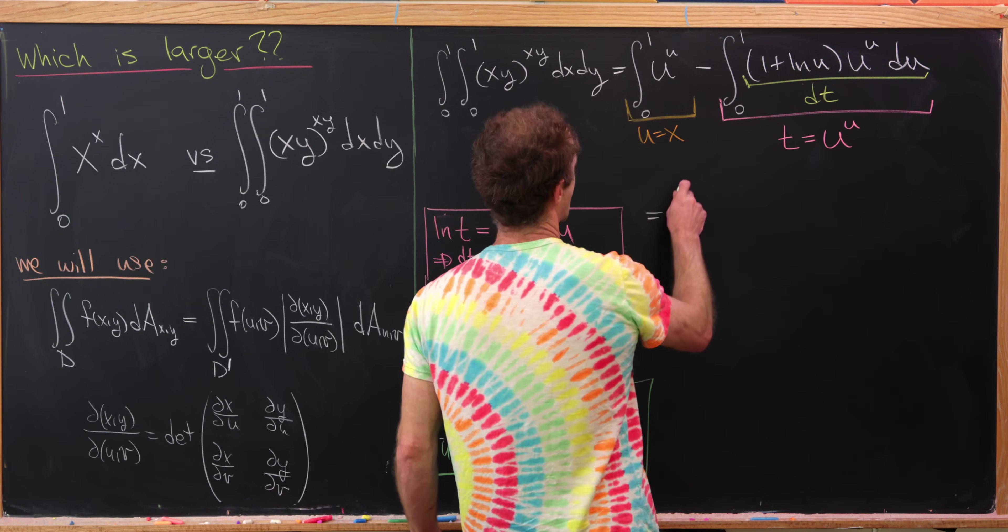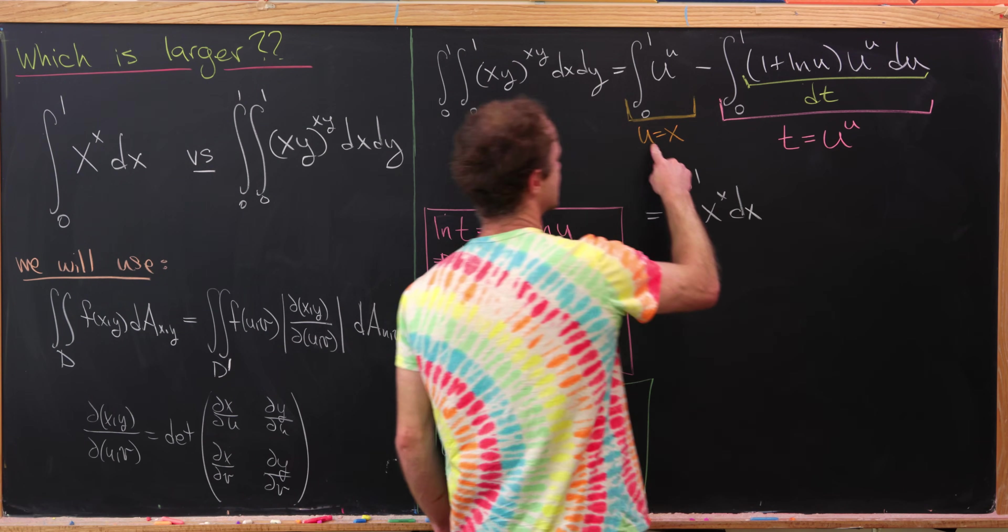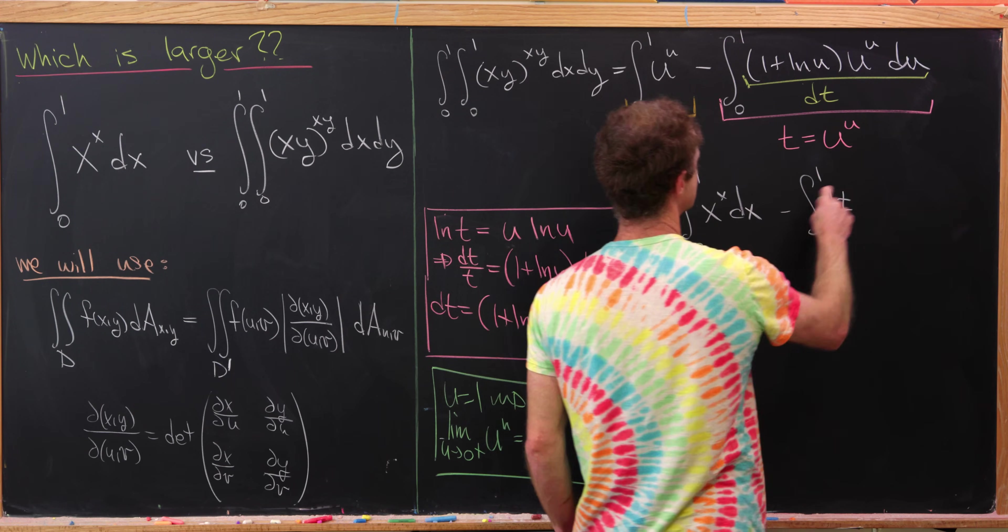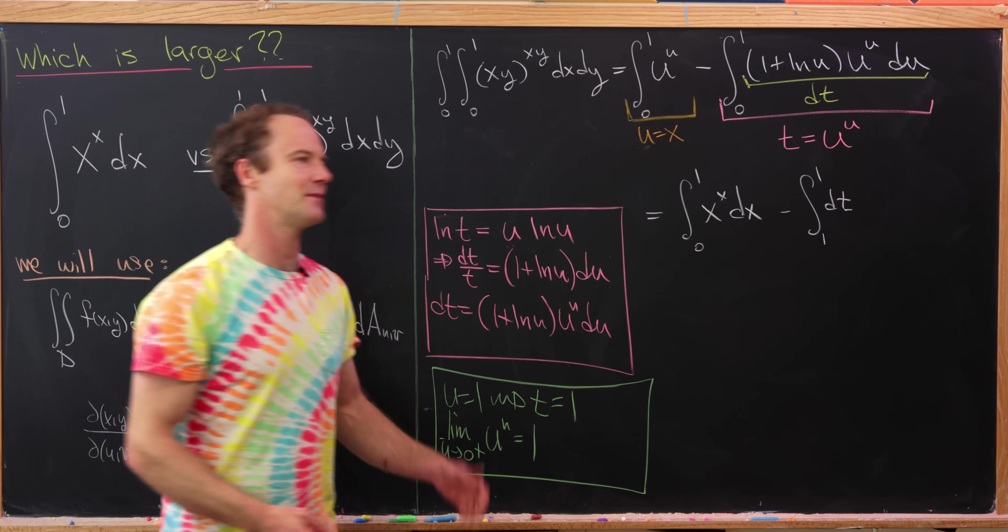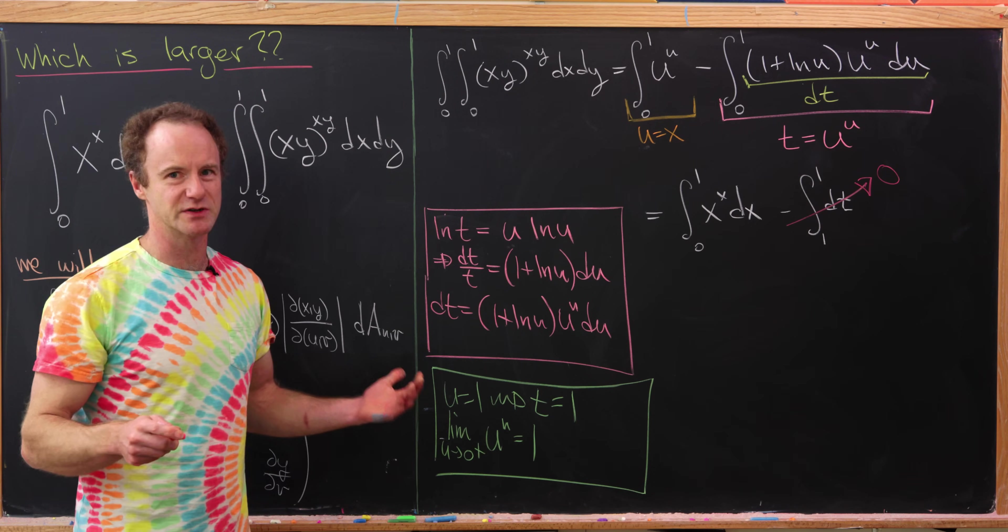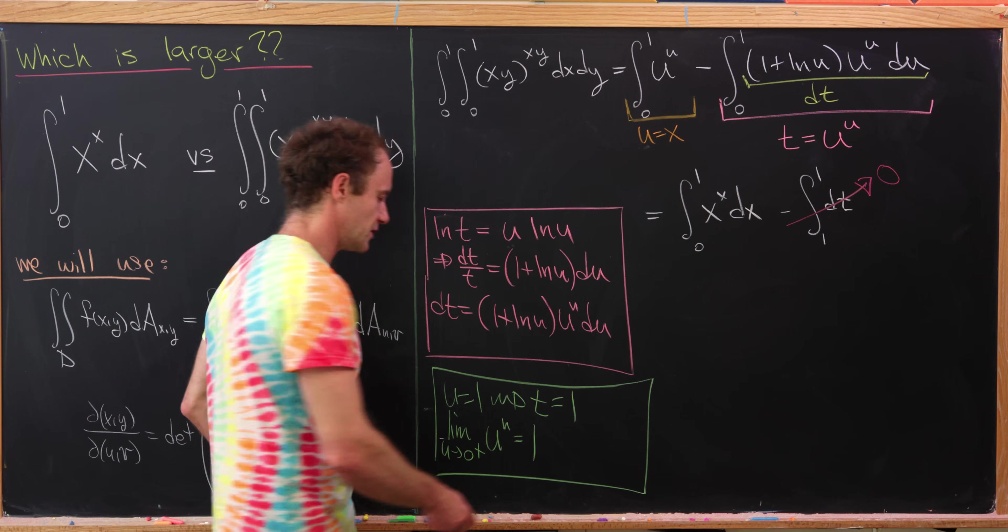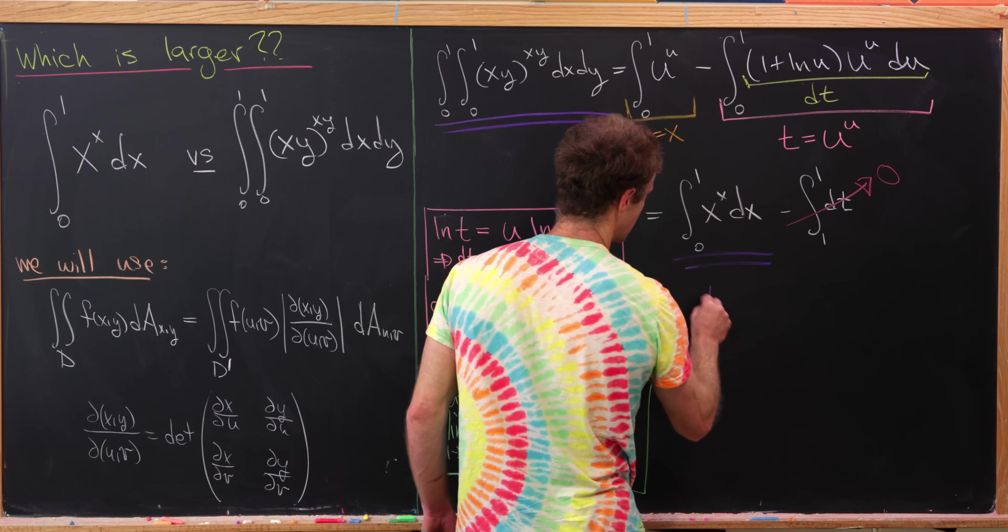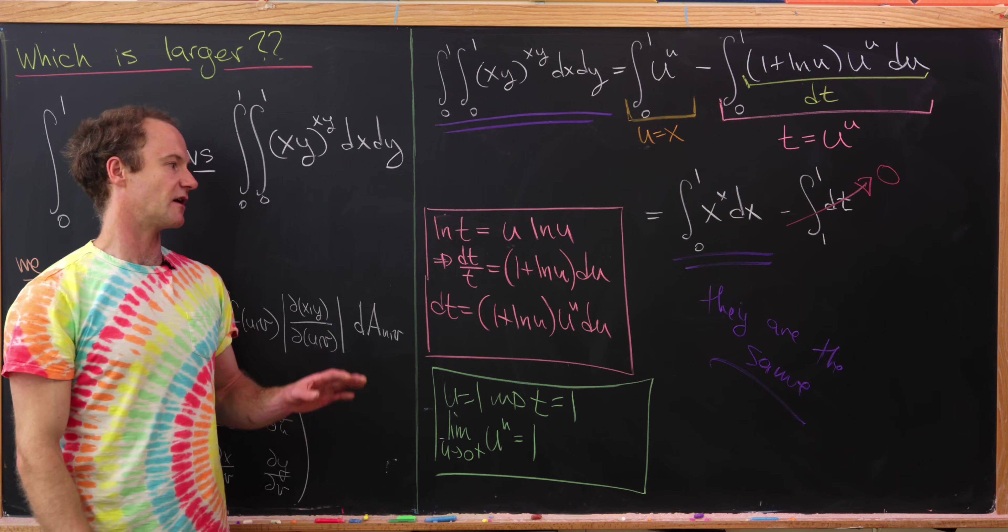So now let's rewrite what we have. We have the integral from 0 to 1 of x to the x dx. So that's from this orange change of variables. And then minus the integral from 1 to 1 of dt. But what's the integral from 1 to 1 of dt? Well, that's simply equal to 0. That's because we're calculating the area under the curve of something between 1 and 1. Well, there's no width to that, so it's 0. But look at what we got. We have our double integral is, in fact, equal to our single integral. So that means they are the same. So neither one is larger. They are, in fact, equal.